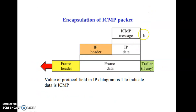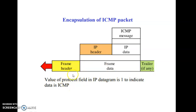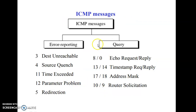Basically, the ICMP message is encapsulated with the IP data and appended with the IP header. Then it goes to the data link layer where the frame header is appended. Encapsulation means appending of the header at the different layers of the OSI reference model. The header is important because it is the control field responsible for proper routing of data in the network.